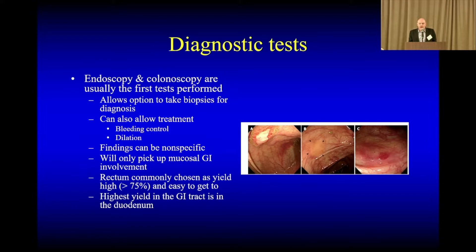We'll typically do endoscopy and colonoscopy to look and see if there's any involvement within the mucosa. This allows us to look directly, take biopsies, and there are stains that we can do to look at amyloid specifically. If we see any sign of narrowing or stiffening, we can stretch in that area. If there's bleeding, we can treat that. The findings are often non-specific, but this is helpful for looking at that first layer. Oftentimes we'll look at just the rectum because it's the easiest to get to, but if you look at biopsy yield throughout the GI tract, the duodenum is probably the highest yield.